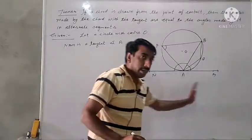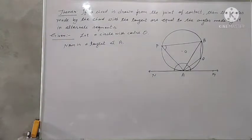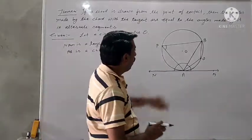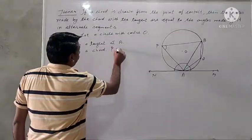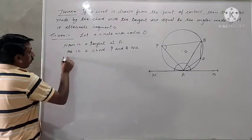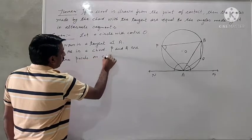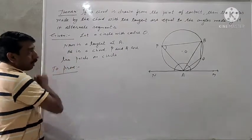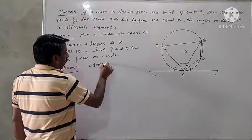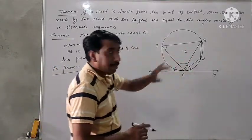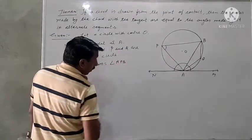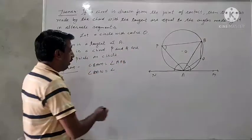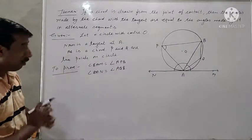Given: a tangent at point A, and AB is a chord. P and Q are two points on the circle. To prove: angle BAM equal to angle APB, and angle BAN equal to angle AQB.